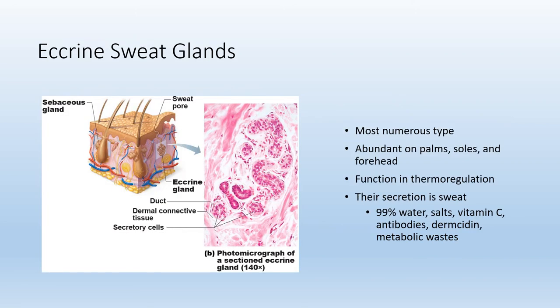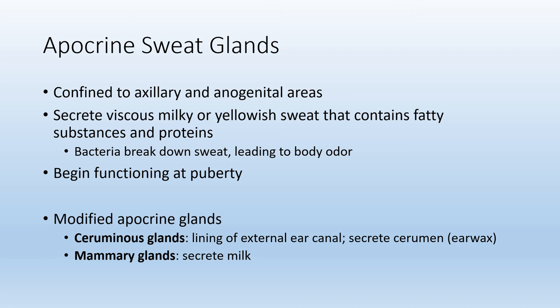An eccrine sweat gland is the more numerous and more common type, found throughout the body. Its primary function is temperature regulation and its main secretion is sweat, which is mostly water with some salts and antimicrobial agents like dermocidin. The apocrine sweat gland is found in the axillary or armpit region as well as the anogenital area. A helpful memory trick: both locations start with the letter A.